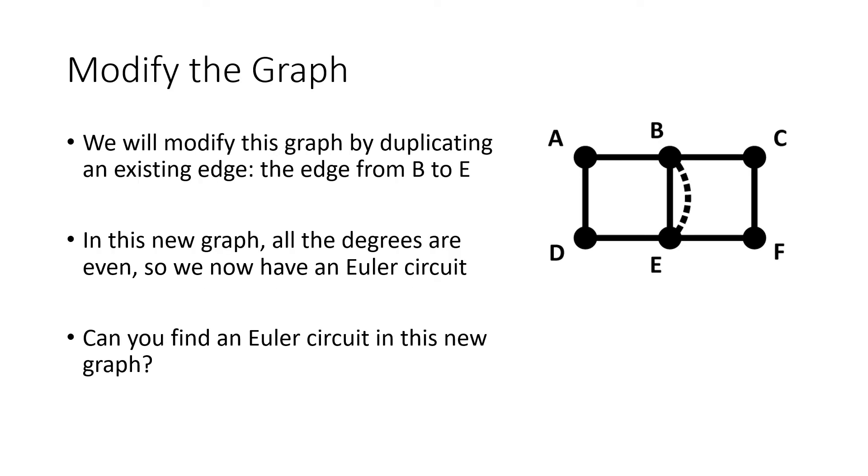So what we're going to do is modify the graph, and I call this fixing the graph. We're going to fix the graph by duplicating an existing edge. In this case, we're duplicating the edge from B to E. We're drawing a new edge that wasn't there before, connecting B to E.